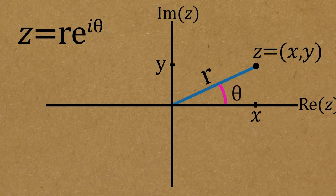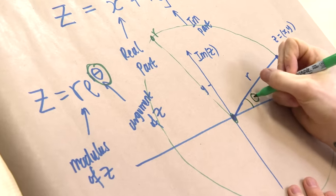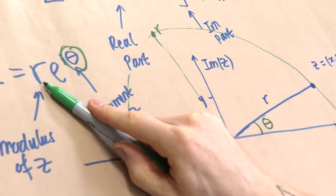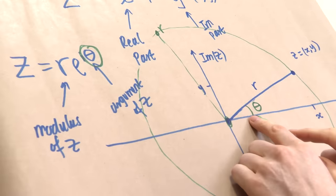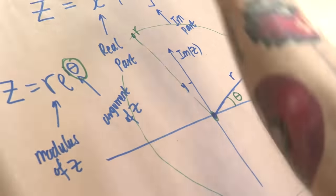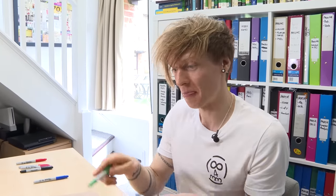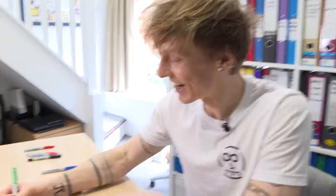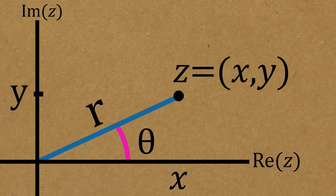We measure theta from the positive x-axis. So if I specify the distance from the origin and the angle from the x-axis, there's only one point — just as we uniquely had one point by specifying horizontal and vertical distance. So now we've got two representations for our complex number z, and we want to compare them because they're the same complex number.